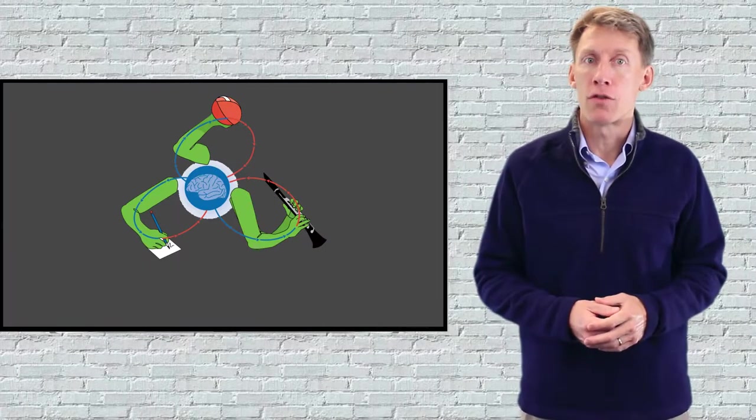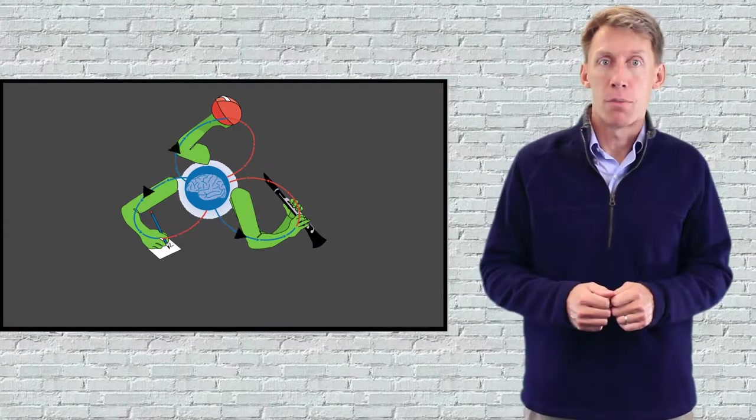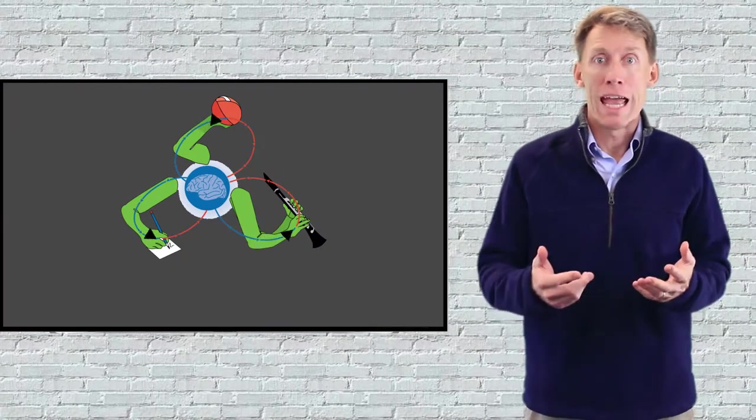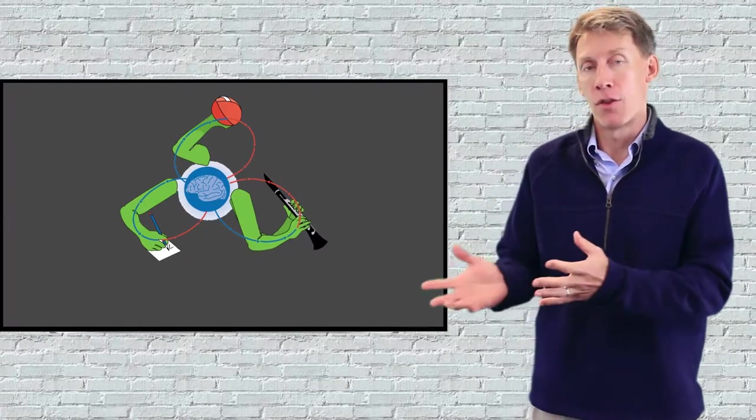This coordination depends on signals going in two directions. The brain sends signals to muscles directing motions, and nerves in the muscles send signals back to the brain providing feedback about the movements. Muscle movements are categorized by size of motion and are depicted in this diagram.